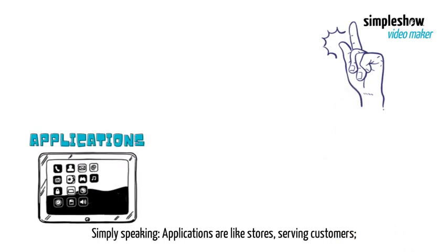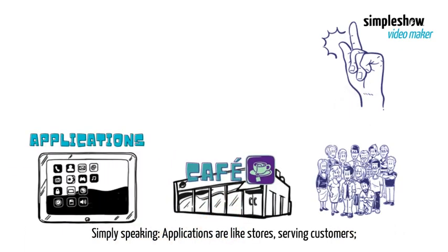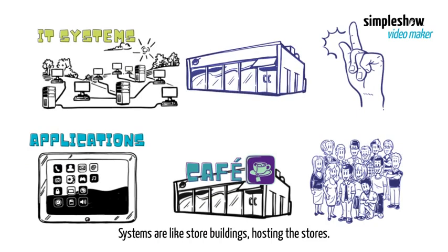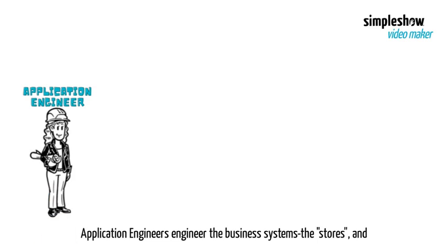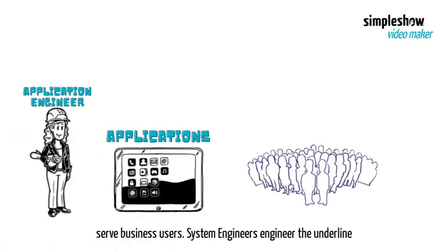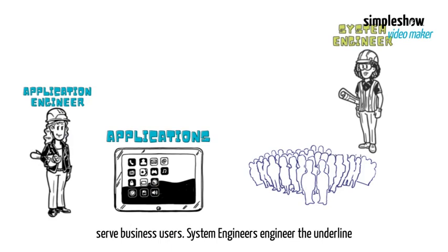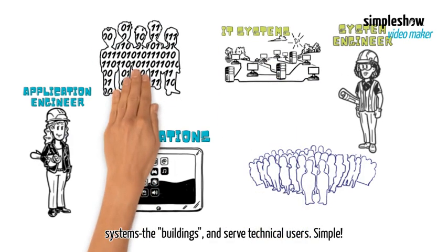Simply speaking, applications are like stores, serving customers. Systems are like store buildings, hosting the stores. Application engineers engineer the business systems — the stores — and serve business users. System engineers engineer the underlying systems — the buildings — and serve technical users. Simple.